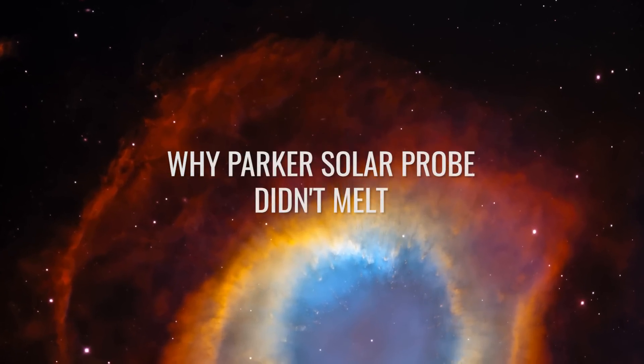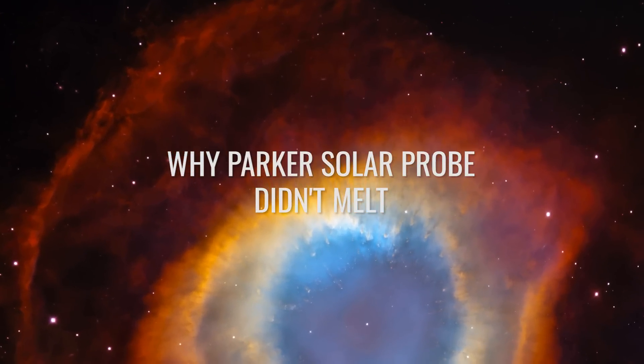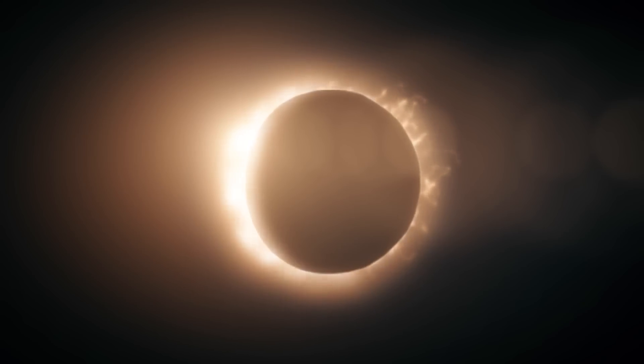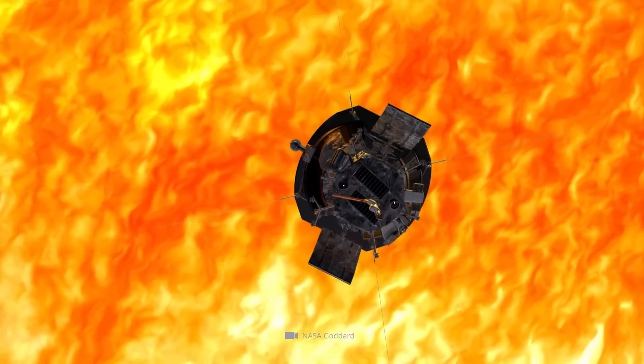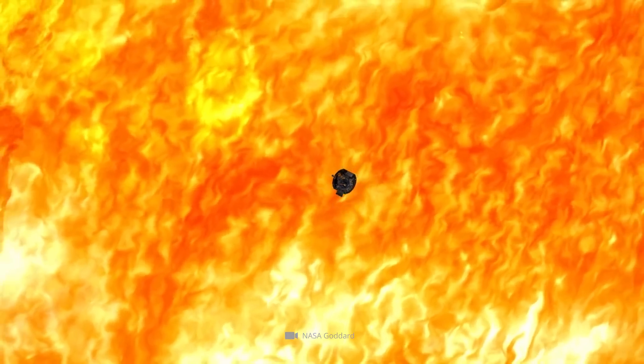Why Parker Solar Probe didn't melt. But how on Earth is that even possible? How does a spacecraft manage to withstand not only temperatures of one million degrees Celsius, but also a relentless bombardment of radiation?